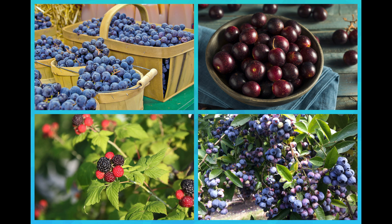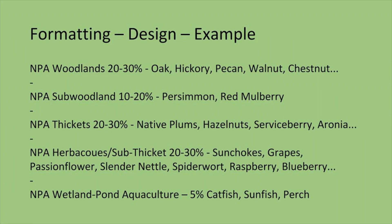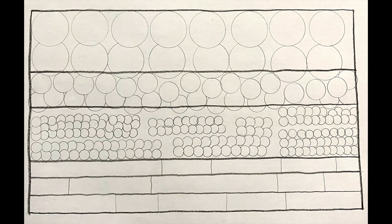With this balanced MPA farm example, staying within these percentages creates a very diverse, lively farm: 20 to 30 percent woodland, 10 to 20 percent subwoodland, 20 to 30 percent thickets, and 20 to 30 percent herbaceous and sub-thicket. You can put some herbaceous and sub-thicket into the woodland section when starting from scratch, because the woodland won't start to shade out the soil for 20 to 30 years, giving you many years of productivity on that land.